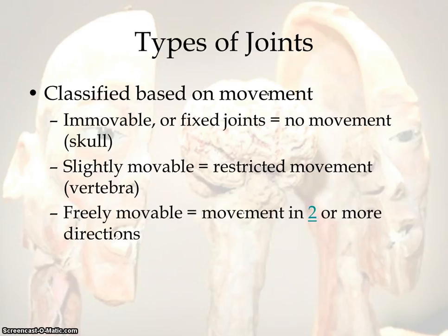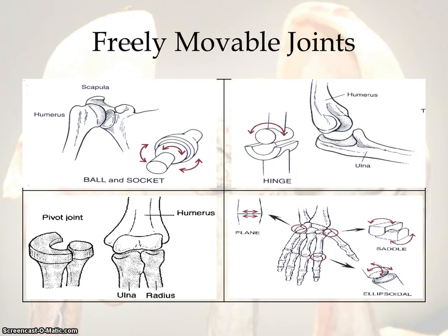Then you have your freely movable joints. These joints have movement in at least two directions, sometimes more — very flexible movement, a wide range of motion. Where your humerus, your upper arm, connects to your scapula, your shoulder, that joint is known as a ball-and-socket joint. The ball part of the humerus fits into a socket built within the scapula, and it rotates like a ball and socket. You can move your arm forwards and backwards, rotate it up and down — some people can rotate 360 degrees — giving you a wide range of motion.